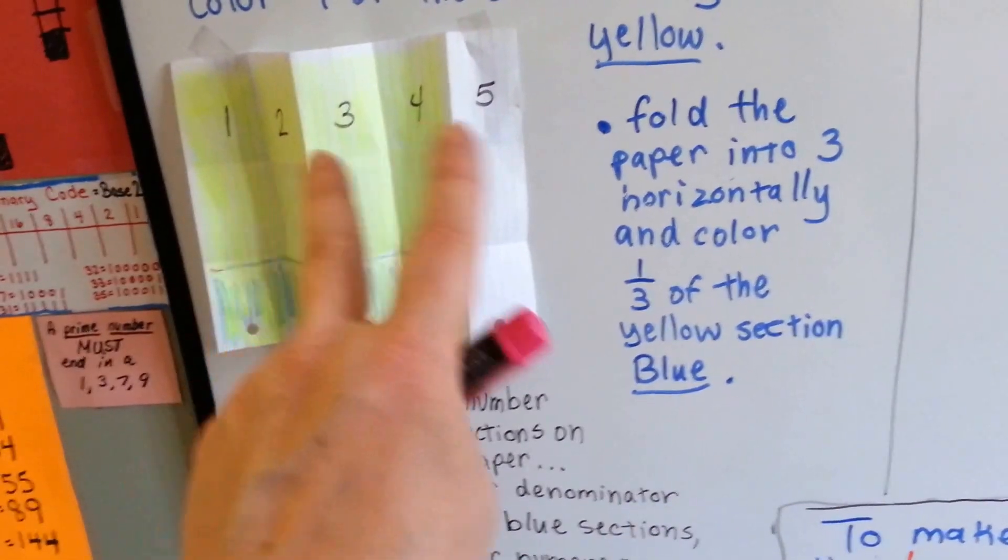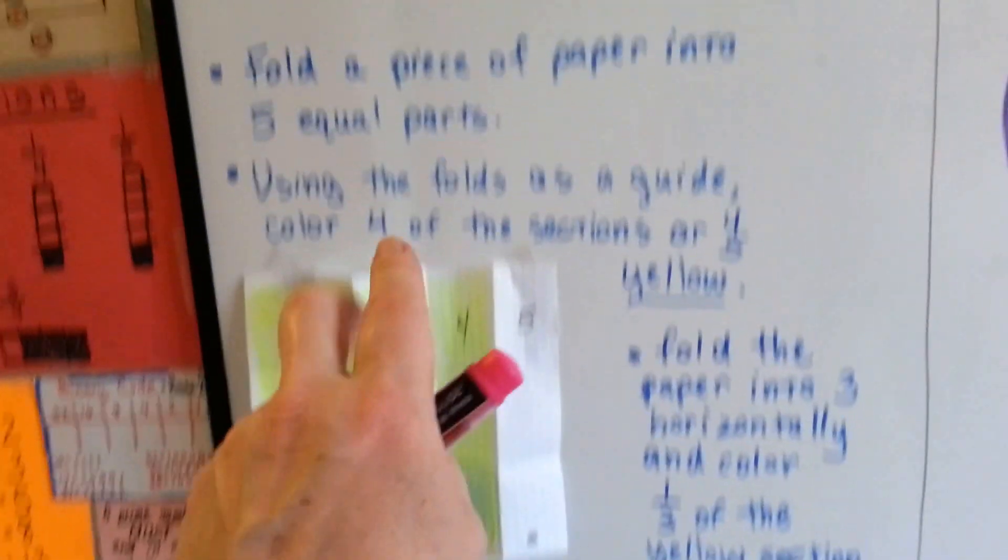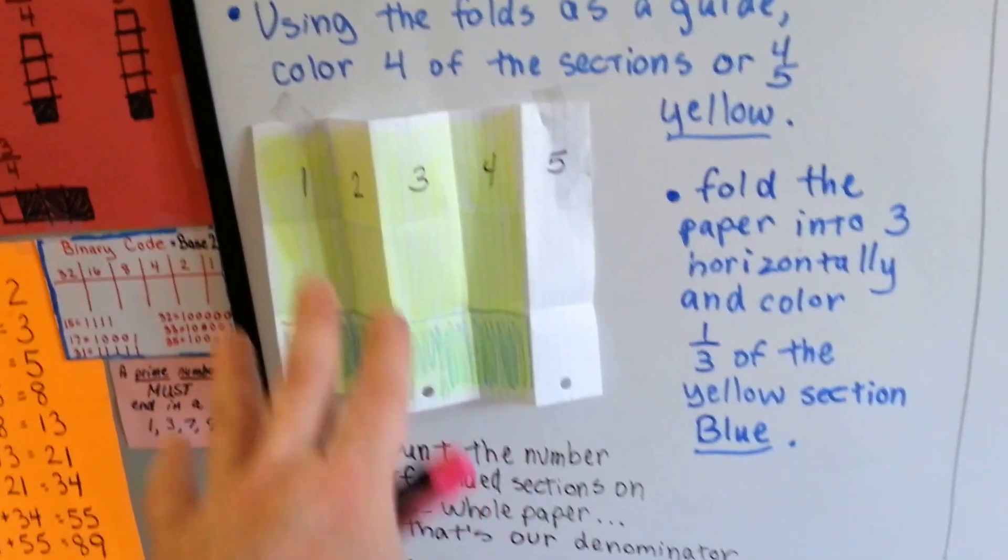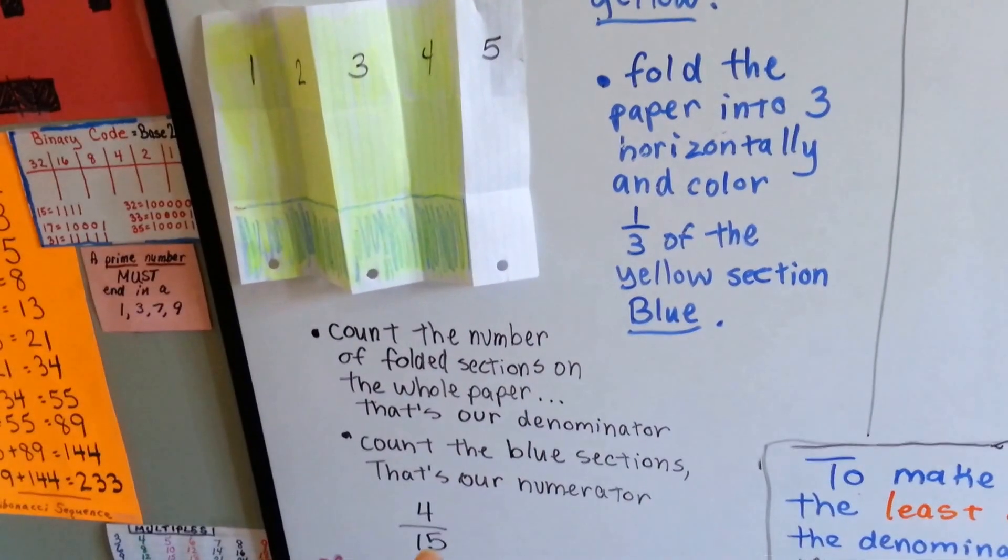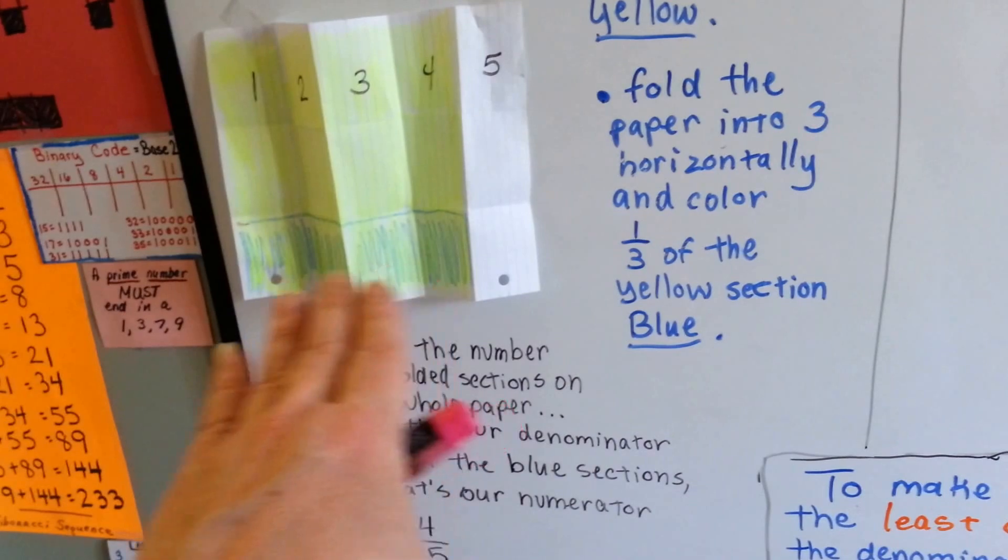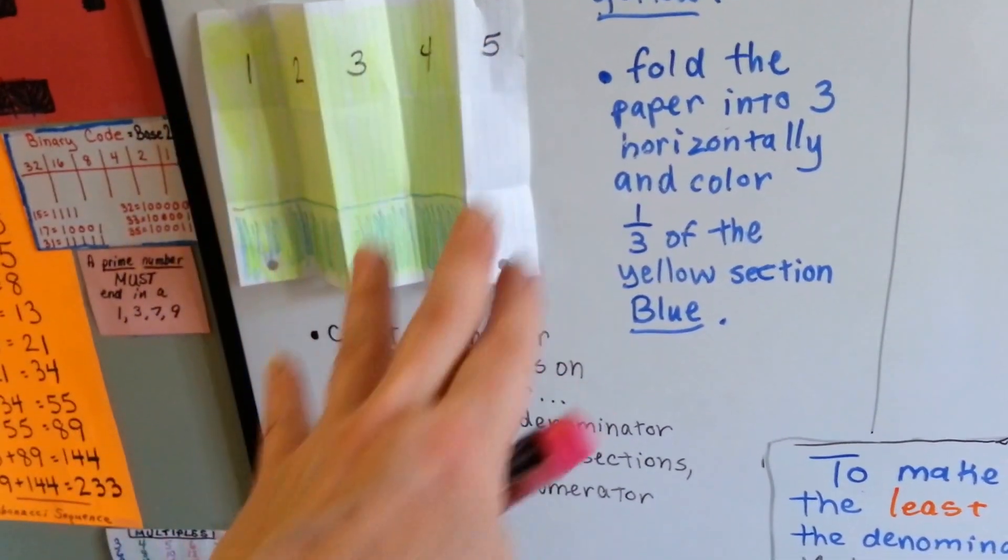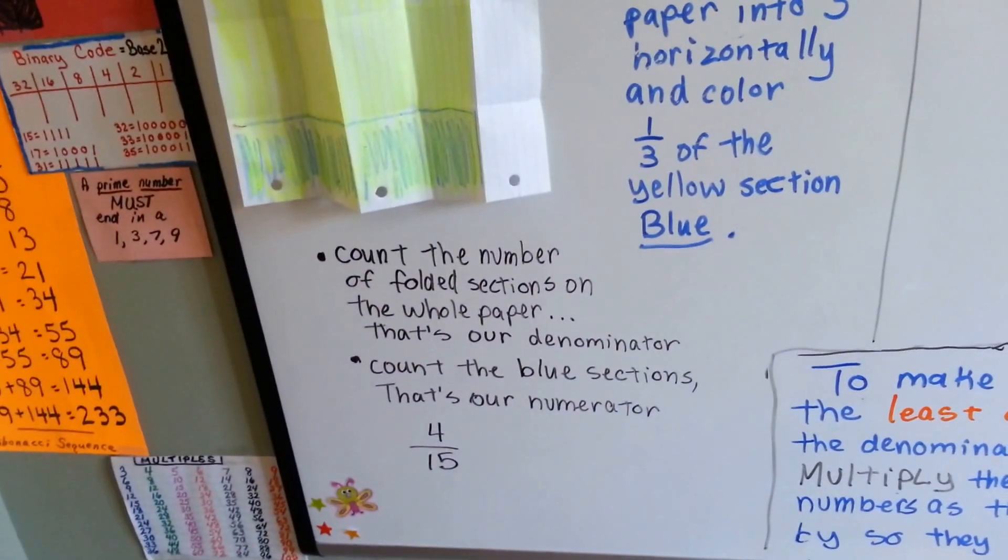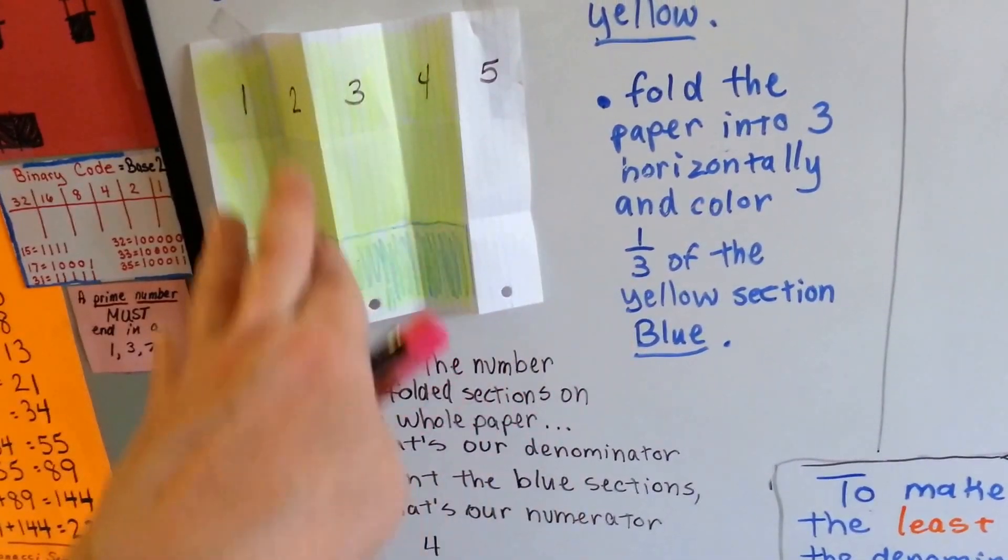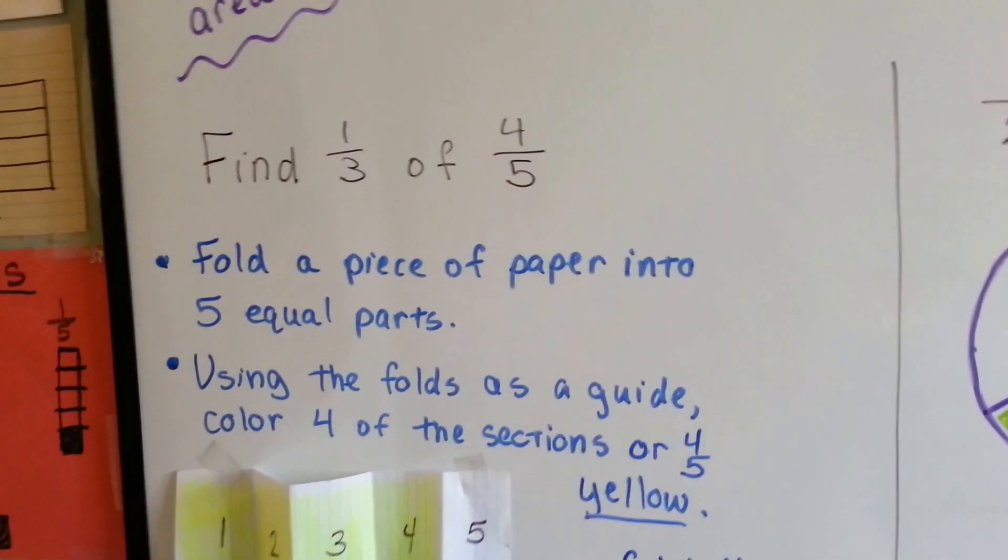The yellow part was the 4 fifths. The blue part was the 1 third of the 4 fifths. The whole paper is the number of the denominator, 15. There's 15 squares that we folded it into. The blue part is the numerator. The whole paper's folds is the denominator. So we counted the blue sections and got 4 out of the 15 squares on the whole paper. So 4 fifteenths is the answer.